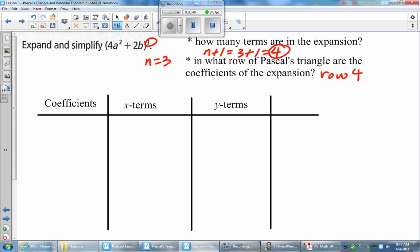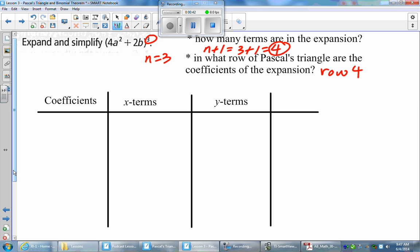Once again, I'm going to use this table method to organize all the expansions because it can get pretty tedious after a while. Let's look at the coefficients. Since we're looking at row 4, we go 3 choose 0, which is just 1. Then 3 choose 1, which gives you 3. 3 choose 2 gives you 3 again. And 3 choose 3 is just 1. So here are the coefficients of our expansions.